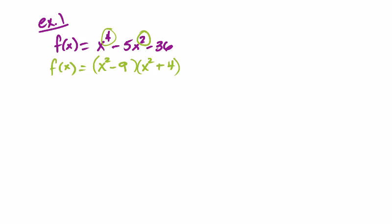And so now we can keep factoring, because we do have one situation where it's difference of squares. So it'd be f of x equals x minus 3 and x plus 3, and the x squared plus 4 stays the same, because we can't factor that.